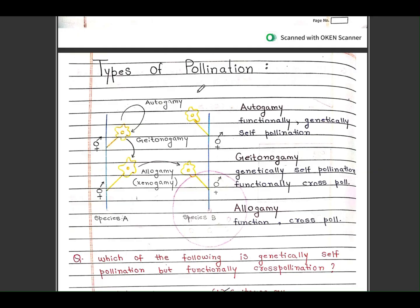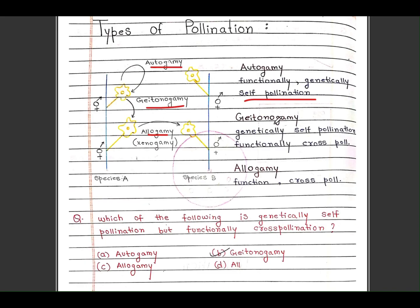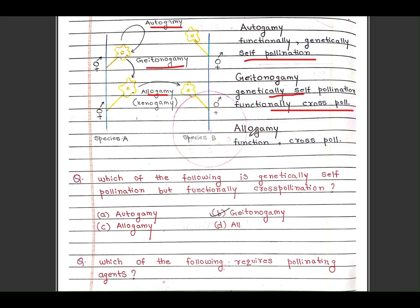Types of pollination: there are 3 types. Autogamy, geitogamy, and allogamy. Autogamy is self-pollination, occurs in one flower. Geitogamy is genetically self-pollination but functionally cross-pollination. Allogamy is functional cross-pollination, occurs between two different plants of the same species.